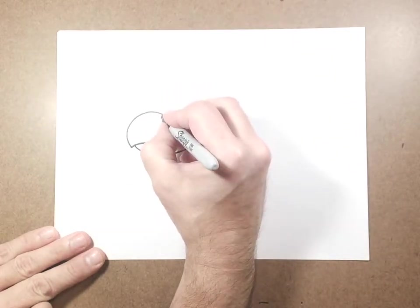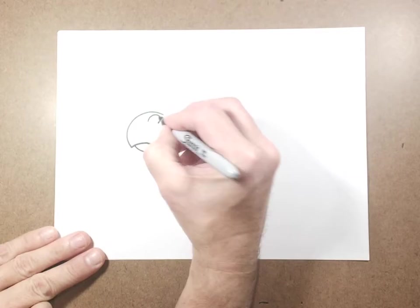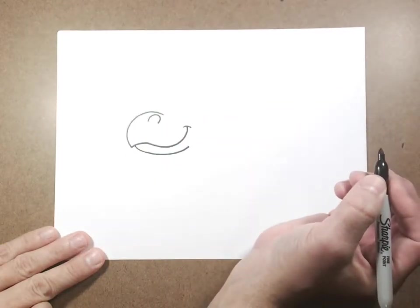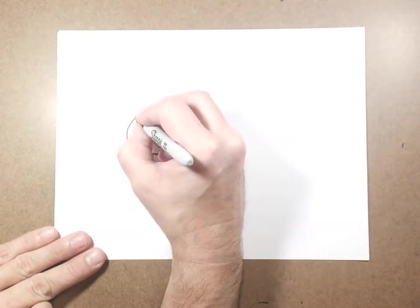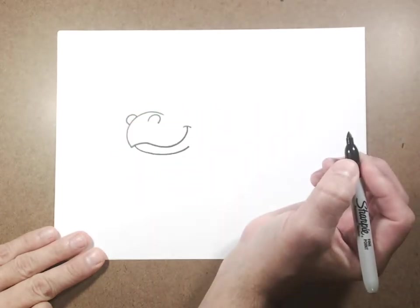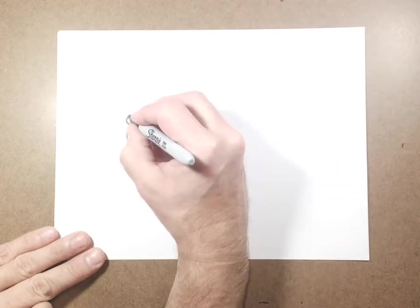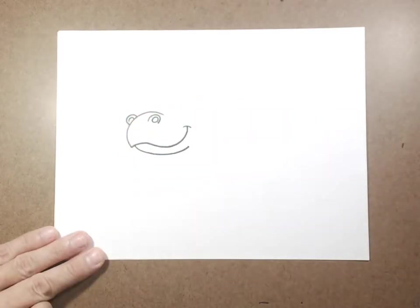After I've done that, I'm going to go back up to that first curved line, and I'm going to draw one little kind of upside down U for a nostril. And then another one on the outside over here, and then I'm just going to draw a little circle in there for the inside of the nostril.